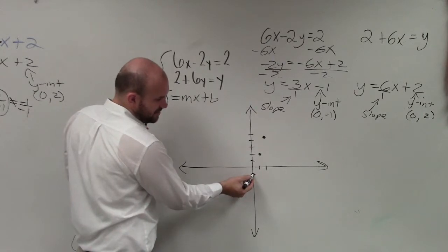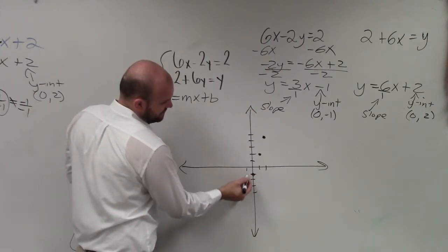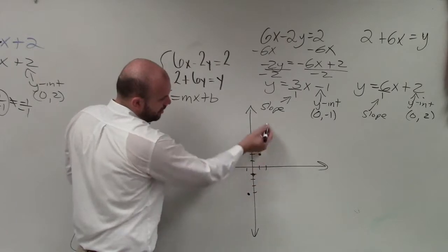You could also go in the negative direction. You could also go down 3: 1, 2, 3, to the left one. But you guys notice they all lie in the same line.